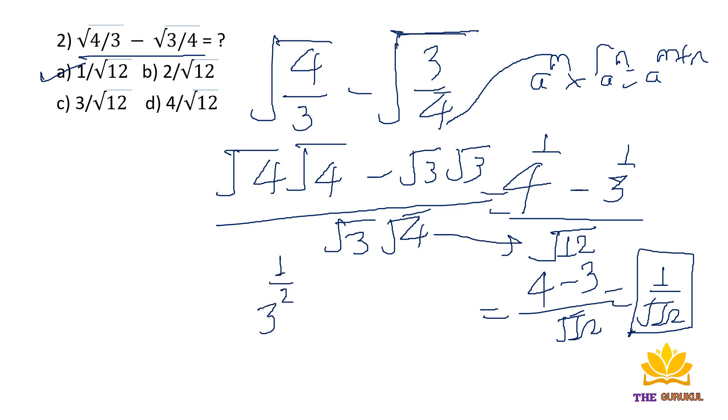This is our final answer: 1 by root 12, which is option a. We can also write 3 raised to 1 by 2 times 4 to the power 1 by 2. We have a rule: if a raised to m and b raised to m, then we write a times b to the power m. So we write 3 times 4 to the power 1 by 2, which is 12 to the power 1 by 2, or root 12.